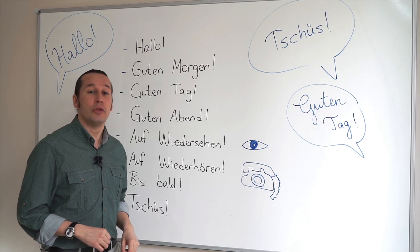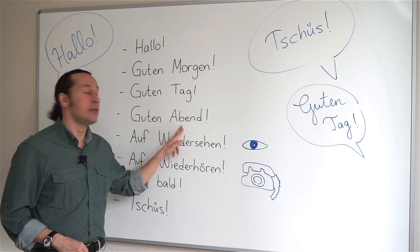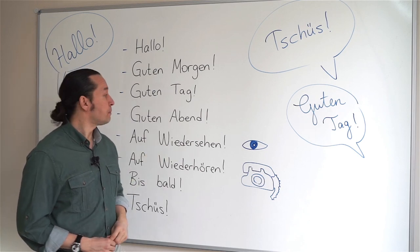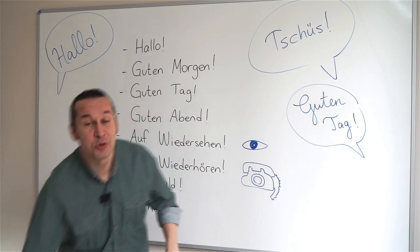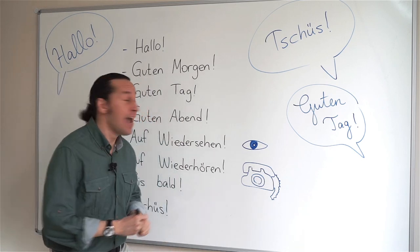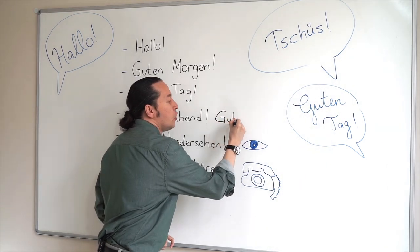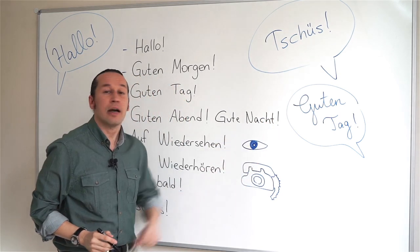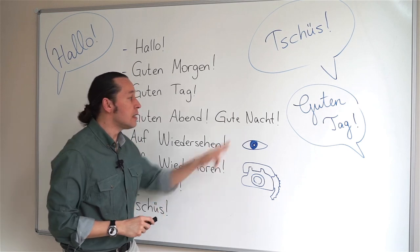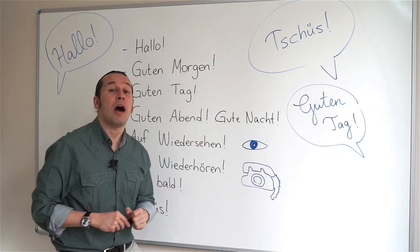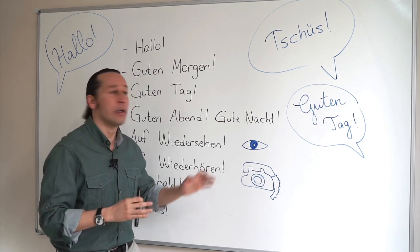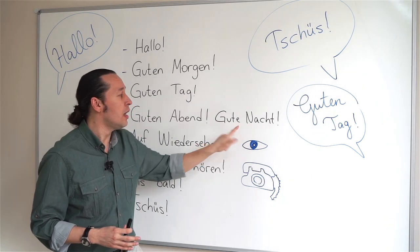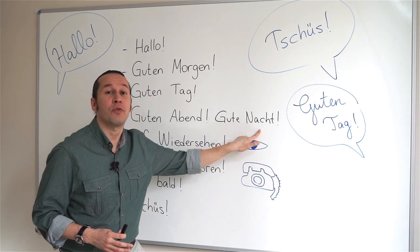If I want to say good evening: Guten Abend! Guten Abend! That stands for good evening. And here, what I forgot to write is, if you say good night then you need to say Gute Nacht. Gute Nacht! But here, if you've noticed, there's no N. That's because of the articles, which will be in our next videos.